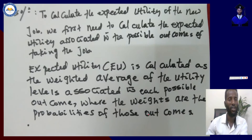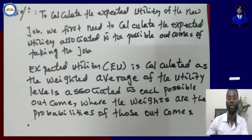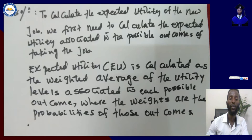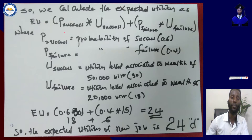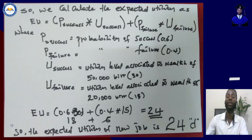To calculate the expected utility of the new job, we first need to calculate the expected utility associated with the possible outcomes of taking the job. The expected utility (EU) is calculated as the weighted average of the utility levels associated with each possible outcome, where the weights are the probabilities of those outcomes. Therefore, EU equals the probability of success times utility of success, plus the probability of failure times the utility associated with failure.